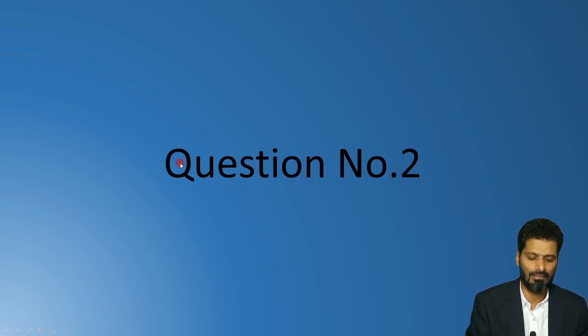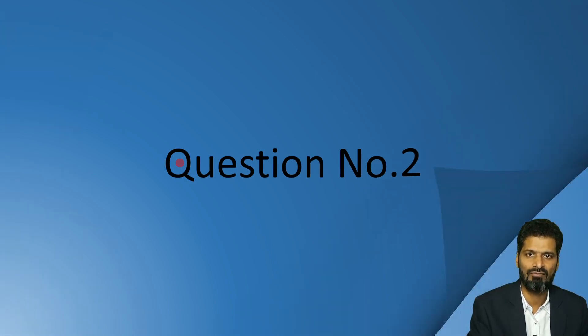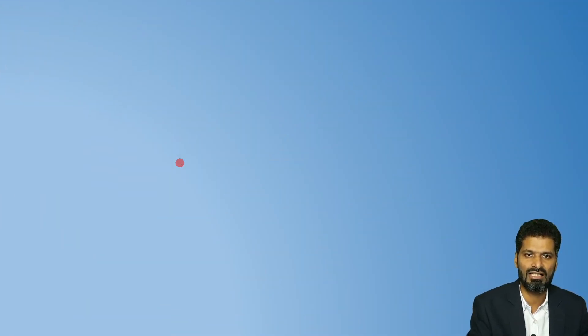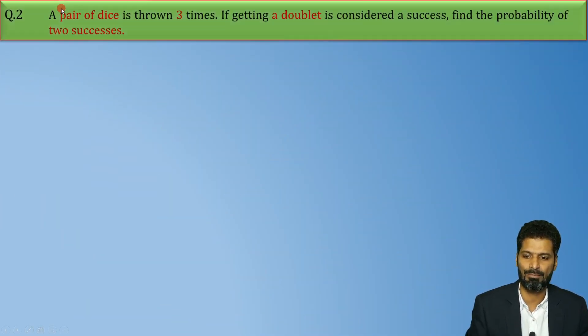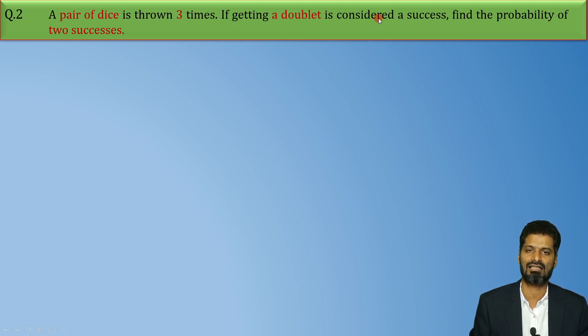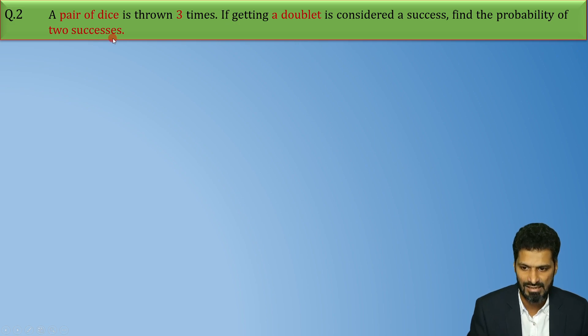Hello everyone, welcome back. Let's begin with the new question. The question says: a pair of dice is thrown three times. If getting a doublet is considered as success, find the probability of two successes.